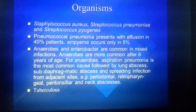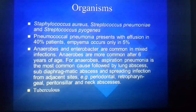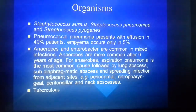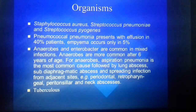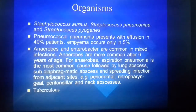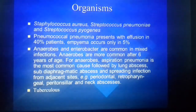The common organisms are Staphylococcus aureus, Streptococcus pneumoniae, and Streptococcus pyogenes. Pneumococcal pneumonia presents with effusion in 40% of patients, and empyema in only 5% of patients. Anaerobes and enterobacteria are common in mixed infections, and anaerobes are more common after 6 years of age.